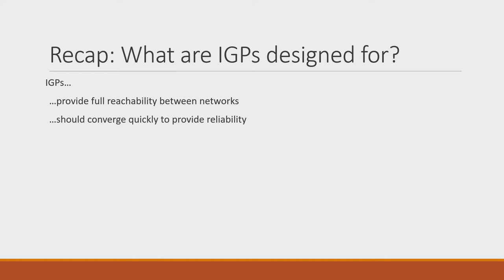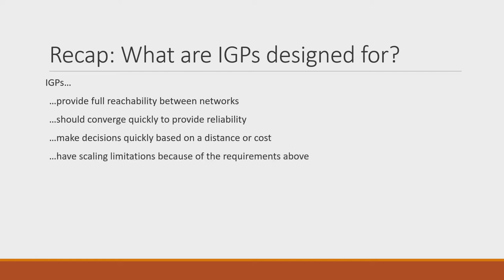They do this using some sort of basic routing metric. For distance vector protocols, this is a distance, like a hop count in RIP or a composite metric in EIGRP. For link state routing protocols, this is a cost associated with an interface. In both cases, the metric is relatively flat and straightforward, providing the ability for routers to move fast. IGPs aren't without faults — distances, topology tables, and link state databases can only be so large. So while IGPs are fast, the tradeoff is that they can't remain fast as more routers are added. At some point, larger networks start to run up against these scaling limitations.